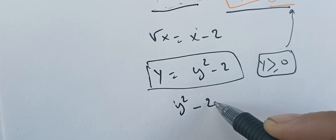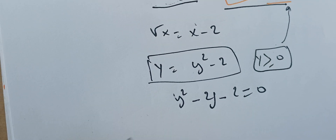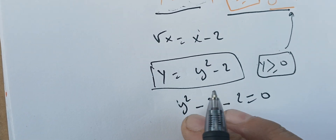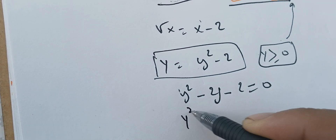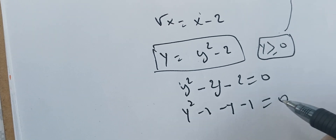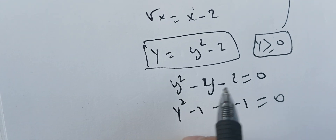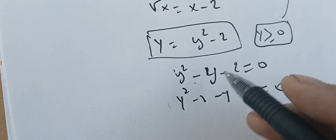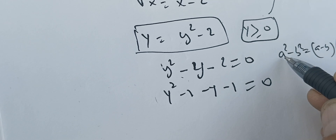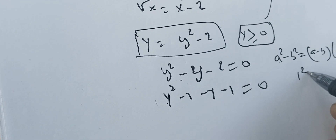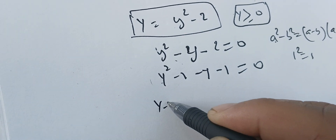To solve for Y, we rearrange to get Y squared minus Y minus 2 equals 0. We can split the middle term: Y squared minus 1 minus Y minus 1 equals 0. Then we apply the difference of squares identity — A squared minus B squared equals (A minus B)(A plus B) — with A equals Y and B equals 1, since 1 squared equals 1.